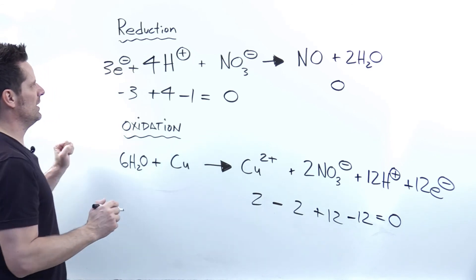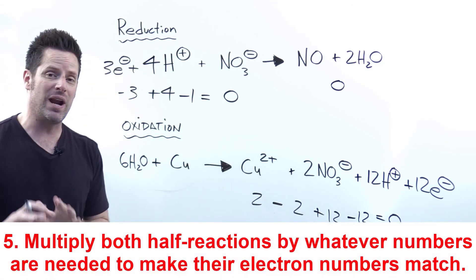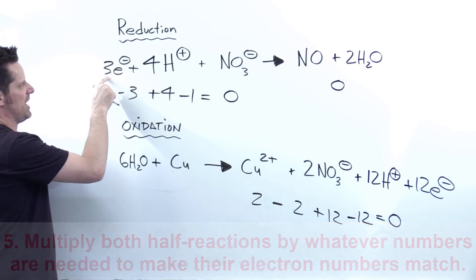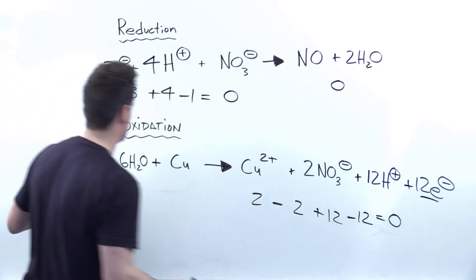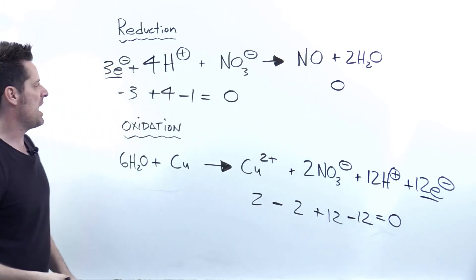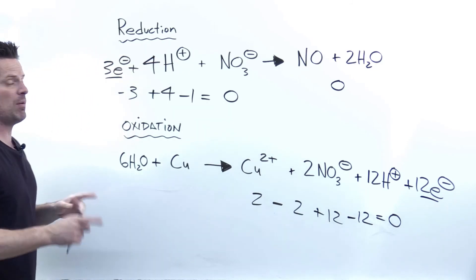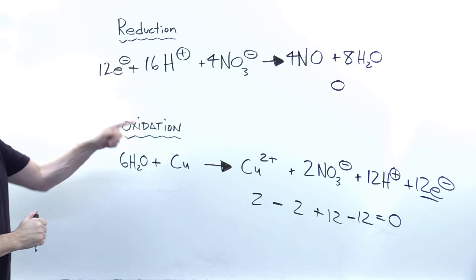Now the last step is we look at the total electron counts in the reduction and the oxidation and multiply each of them by whatever coefficient is necessary to make them equal. You can see, for example, that I have three electrons here, which does not match the 12 electrons down here in my oxidation. To make those equal, I think that if I multiply the entire top reaction by four, that will do the trick. That gives me matching numbers of electrons.